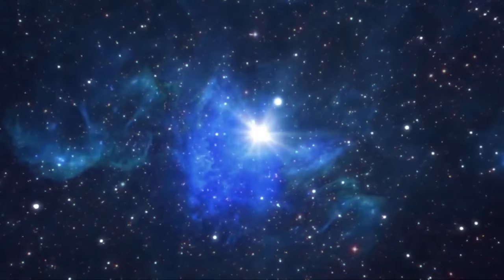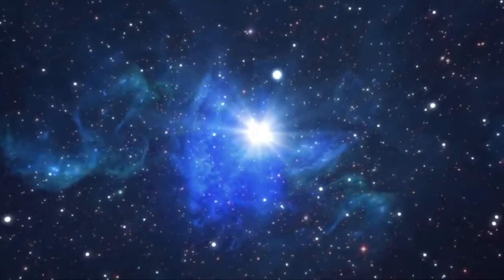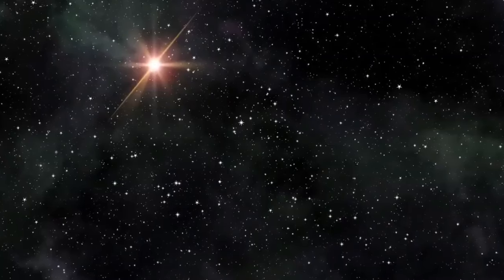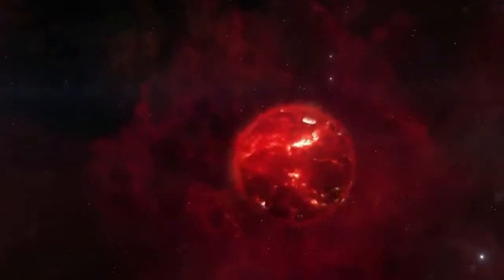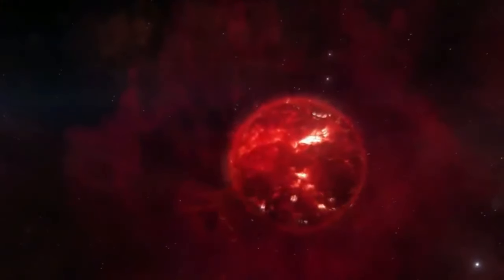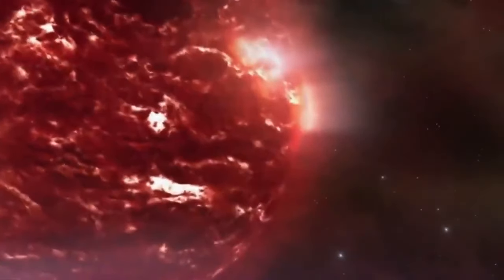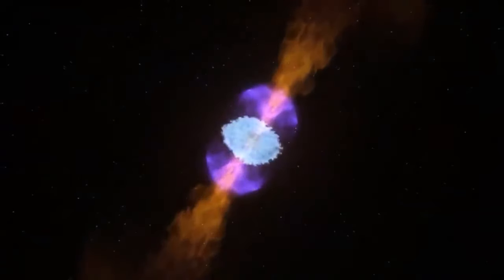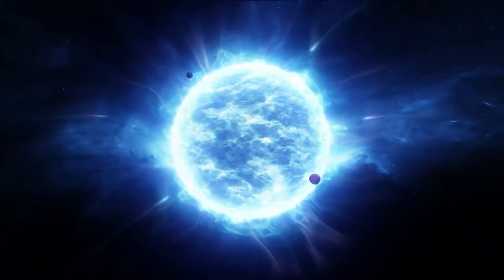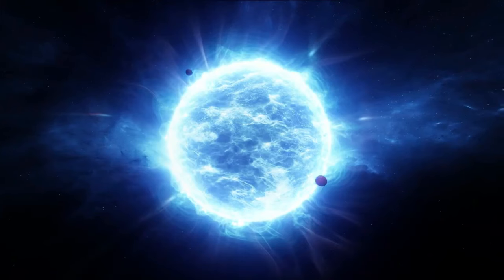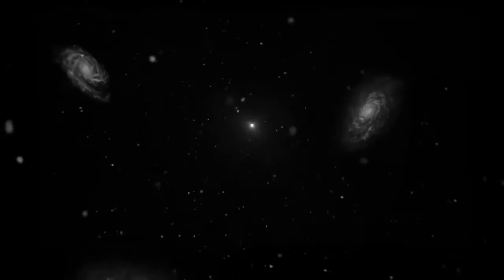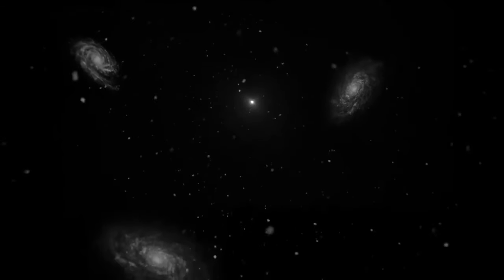In our pursuit of understanding the cosmic destiny of Polaris, we embark on a scientific exploration that delves into the intricate stages of a star's life cycle. Traditional astronomical knowledge teaches us that giant stars, marked by their immense mass, often conclude their celestial journey in a dramatic spectacle known as a supernova. However, Polaris, a unique celestial entity classified as a Cepheid variable star, follows a different narrative due to its distinct characteristics.